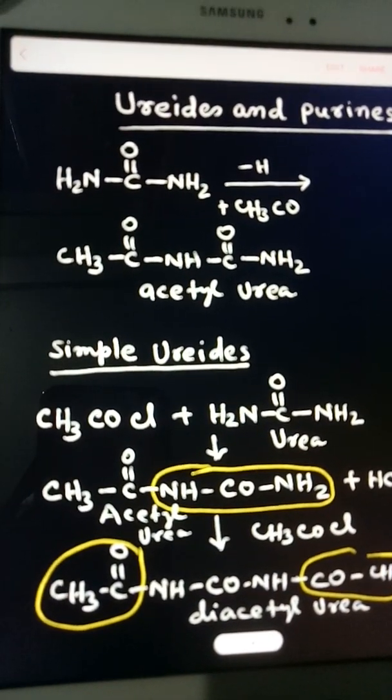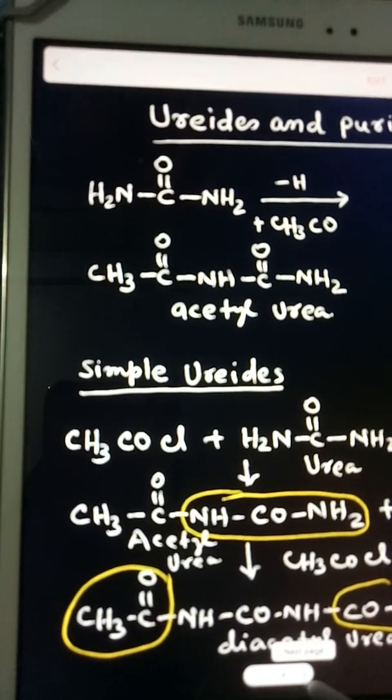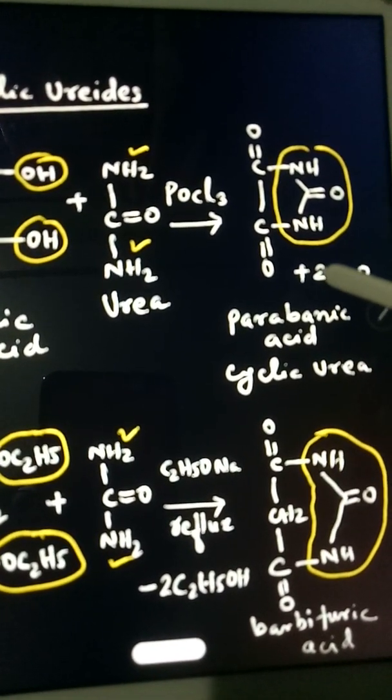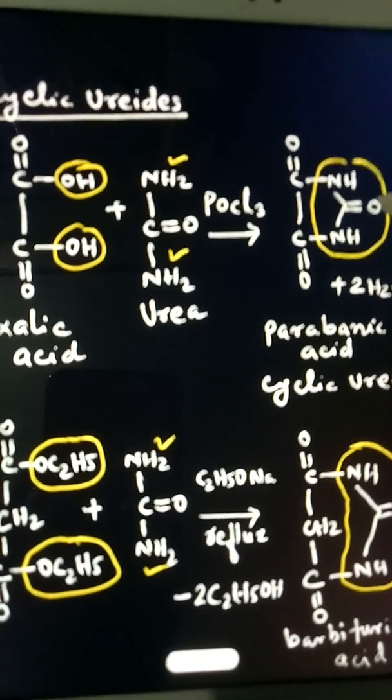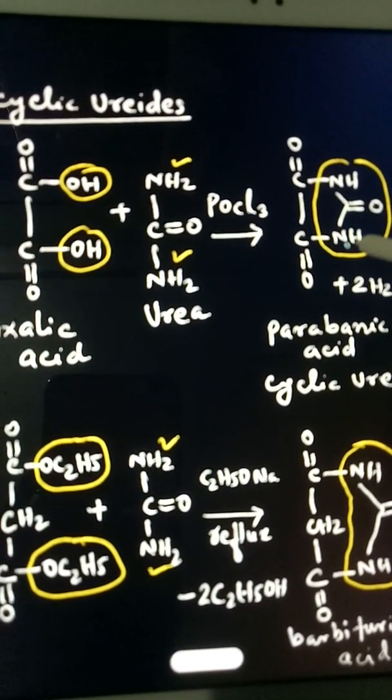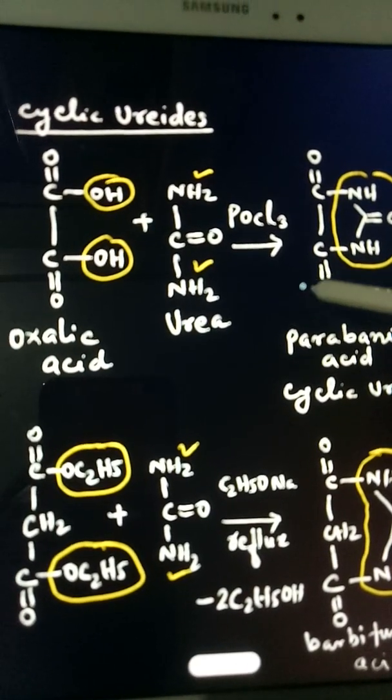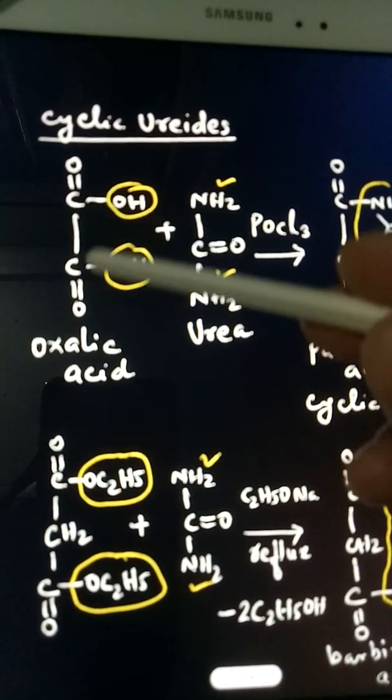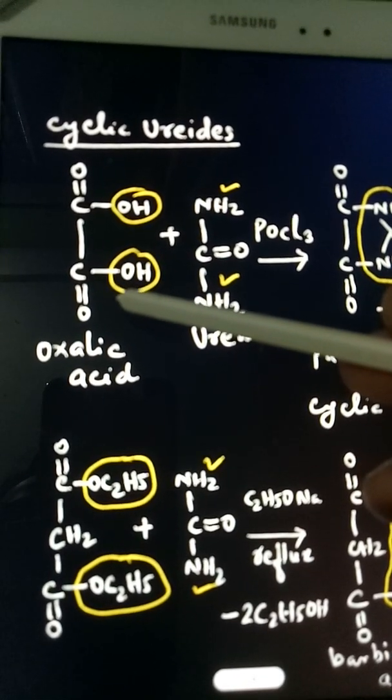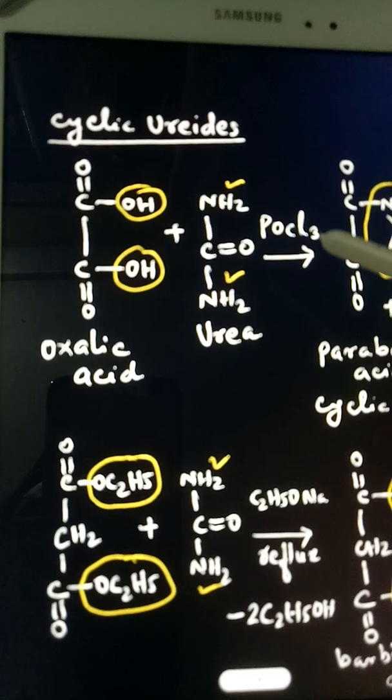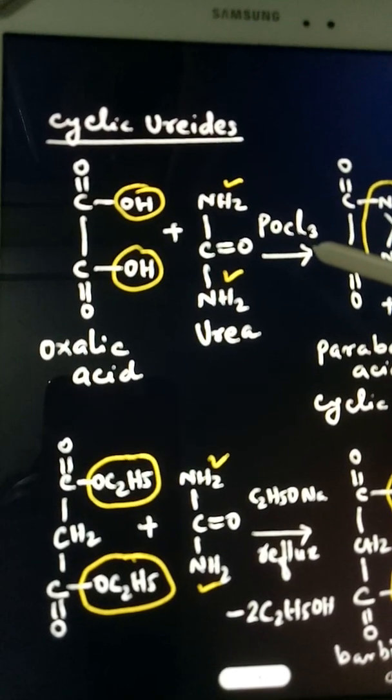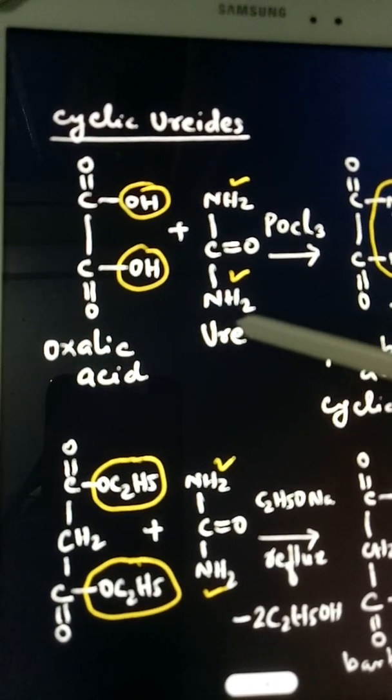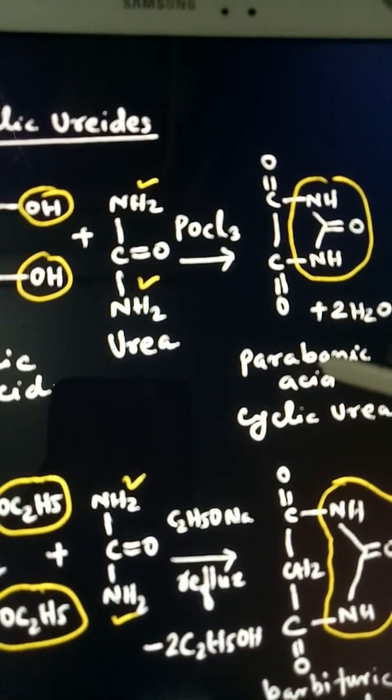Now come to the cyclic ureides. An example of cyclic ureide is parabanic acid. You see the parabanic acid circled - because urea should be there in CONH-NH-CO-CO. It is prepared by the action of dicarboxylic acid on urea in the presence of phosphoryl chloride POCl3. So oxalic acid forms parabanic acid. This is oxalic acid, this is urea, and this is parabanic acid which is a cyclic ureide.